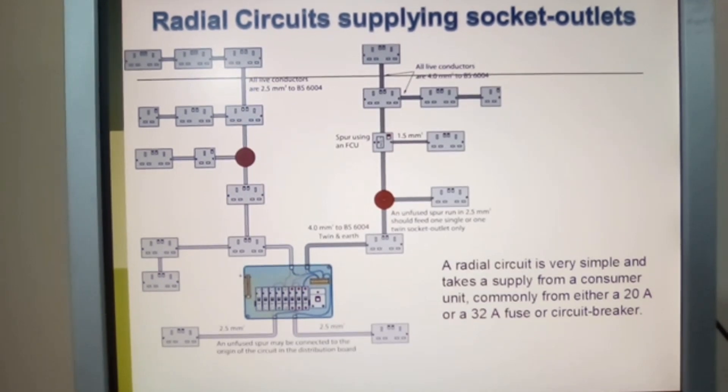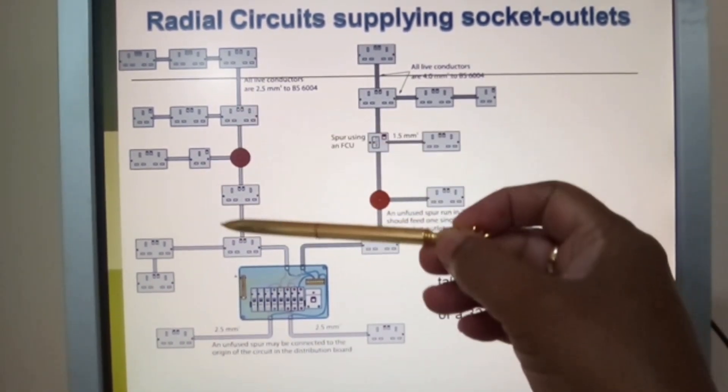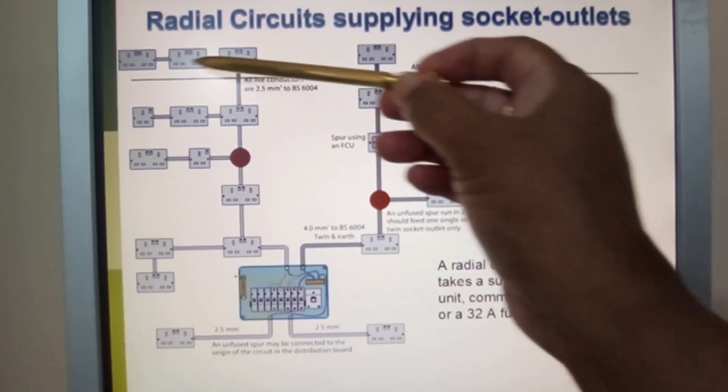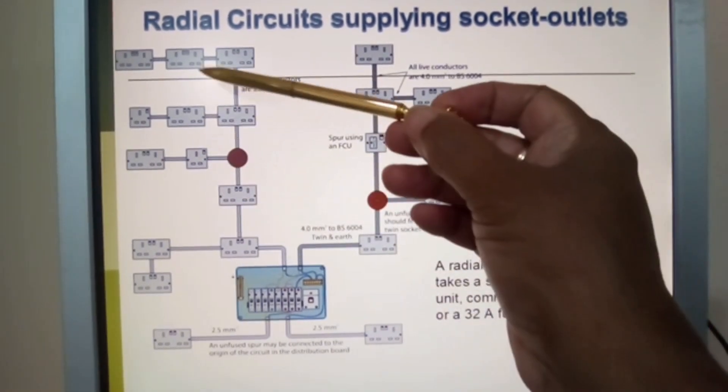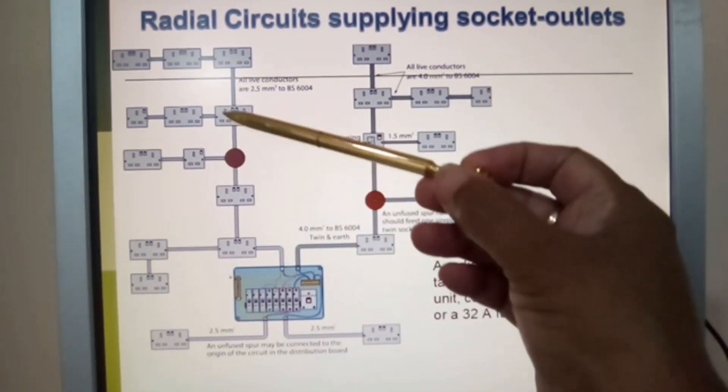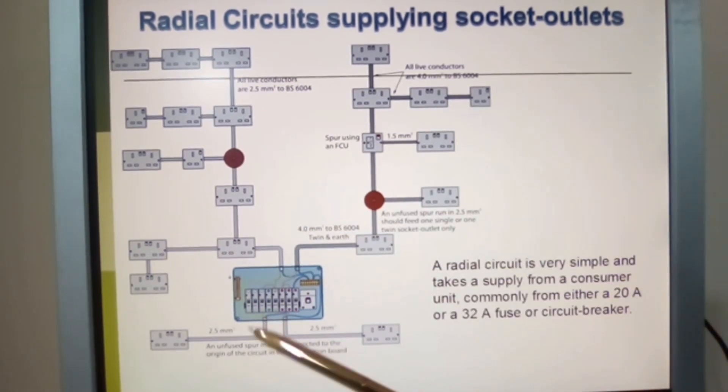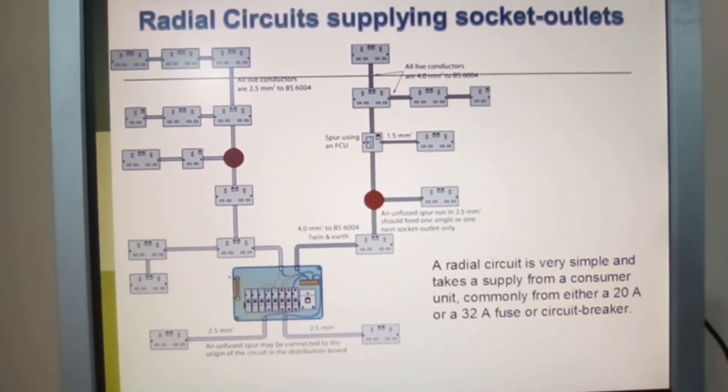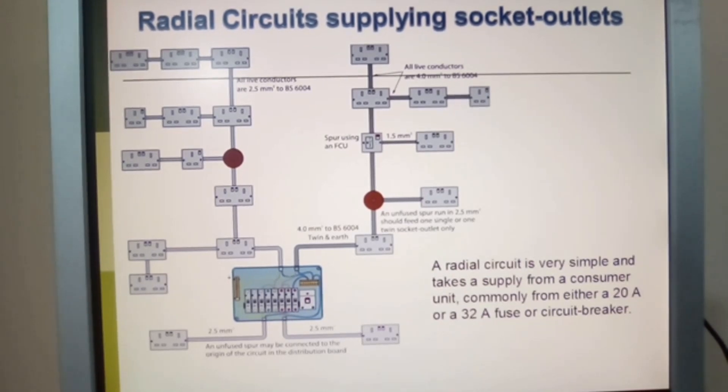The radial circuit can go on, but remember you can only take off the number of sockets or the load to the rating of the fuse or circuit breaker. Do not exceed the rating of your fuse or circuit breaker supply.